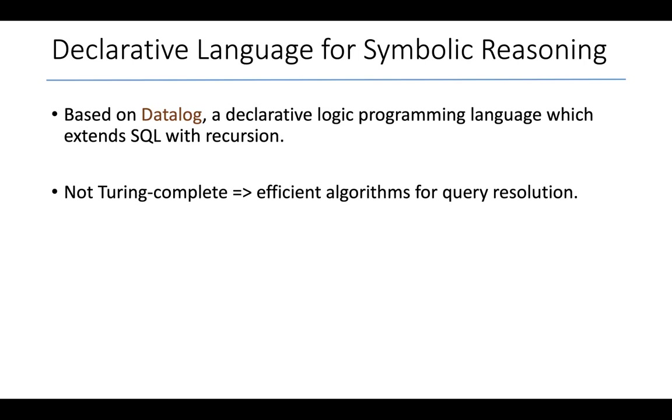In that sense, Scallop is not the most expressive that it could possibly be. Yet in return for this limited expressiveness, we end up having efficient algorithms for query resolution. How do these algorithms help? Because now we can divide an application into its neural and logic components, there is less work to be done for learning the parameters of the neural component, because a lot of the heavy lifting will now be done by the logic component.